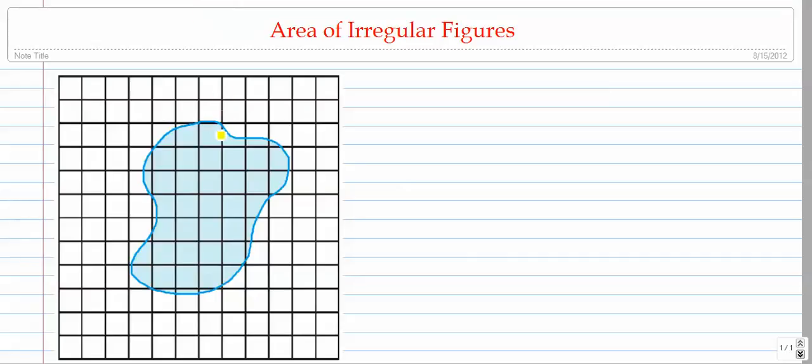The first thing I'm going to do whenever I see a question like this is go through and count how many full blocks there are. So I'm literally going to put numbers on that. I'll use a different color here. I'm going to put numbers on all of the full blocks, every block that is completely blue.